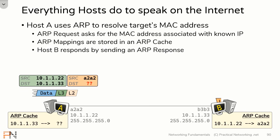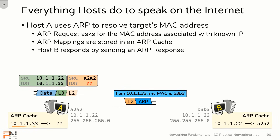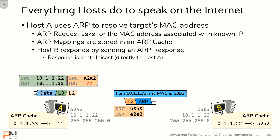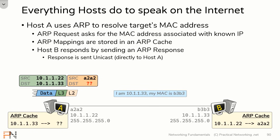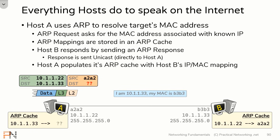Host B will now respond to that ARP request by sending what's known as an ARP response. That ARP response will include the mapping that host A was trying to resolve — specifically the IP address 10.1.1.33 and the MAC address that owns it. This ARP response is sent unicast, meaning directly back to host A. Since host B knows host A's MAC address, it can create the layer 2 header which will take the ARP response directly to host A, without having to interrupt everybody on the wire by using a broadcast. When that ARP response arrives on host A, host A is able to create the ARP mapping that was listed in the ARP response.